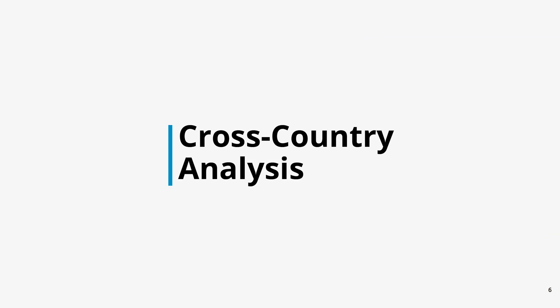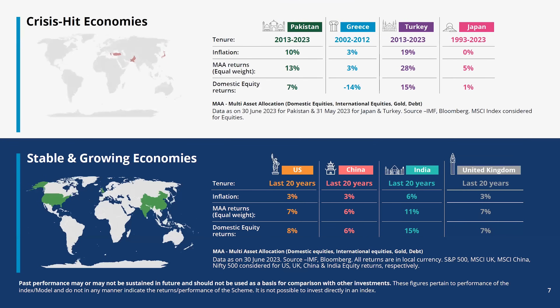Does multi-asset allocation strategies work across economies? There are crisis-hit economies and stable economies. A study of multi-asset allocation strategies on both kinds of economies shows that it has delivered superior inflation-adjusted returns, and in certain cases close to domestic market equity returns as well.